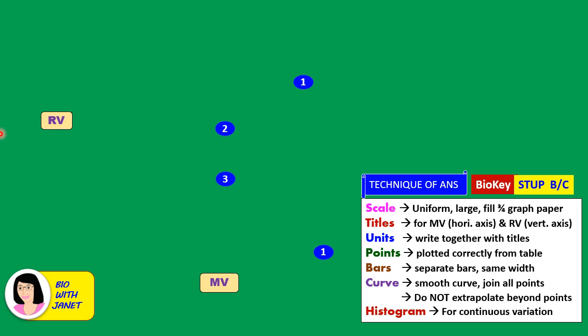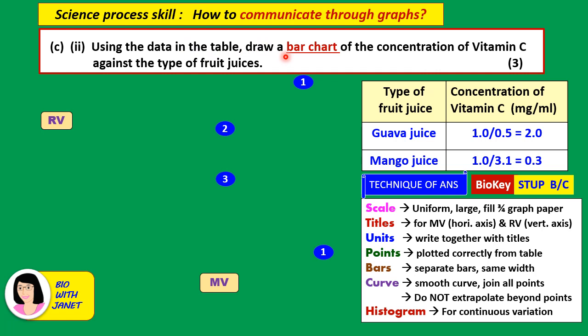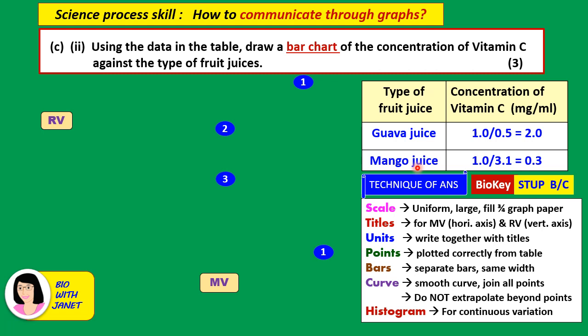The next science process skill is communicating through graphs. The question asks you to draw a bar chart of the concentration of vitamin C against the type of fruit juices. Note it's a bar chart. It's usually draw a graph of RV against MV — RV is always on the vertical axis and MV is on the horizontal axis. Try to draw the bar chart based on the results for guava juice and mango juice. No bar is needed for ascorbic acid as that is not the real RV.